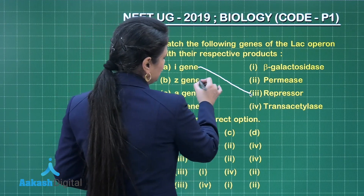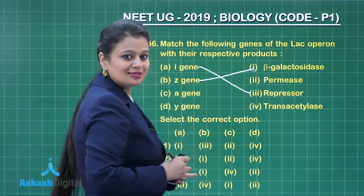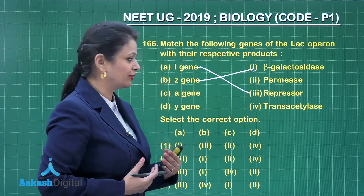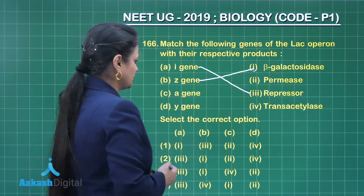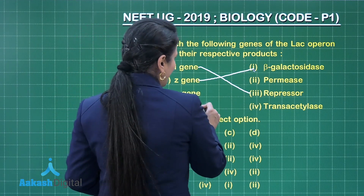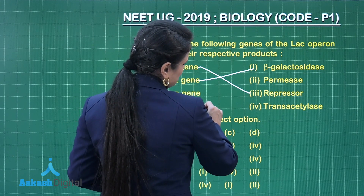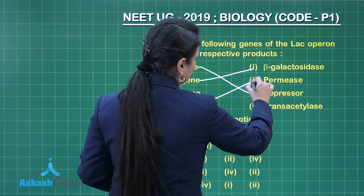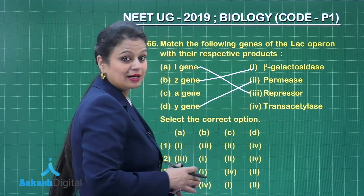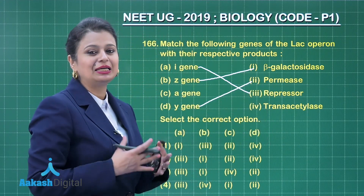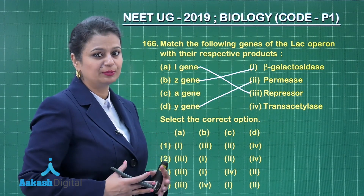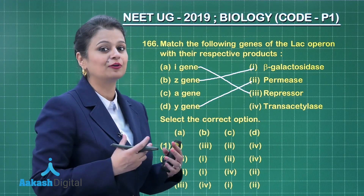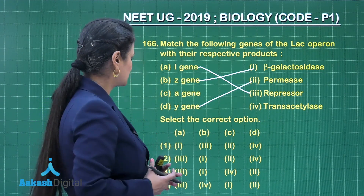The Z gene forms the beta-galactosidase enzyme, which is involved in the breakdown of lactose. The Y gene is responsible for the synthesis of the permease enzyme, which increases the permeability of the cell membrane for lactose.